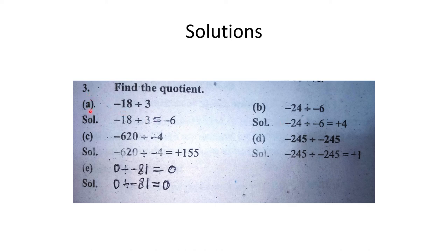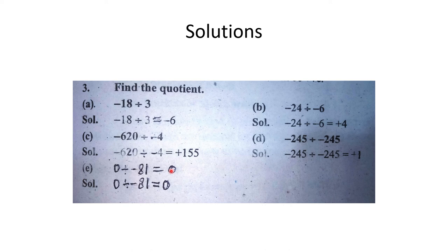Question number 3, A part: minus 18 divided by 3 = minus 6; 3 sixes are 18. B part: 6 times 24, minus minus plus. C part: 620 divided by 4 = 155, minus minus plus. D part: same minus 245 divided by minus 245, answer is plus 1. E part: 0 divided by minus 81 = 0.